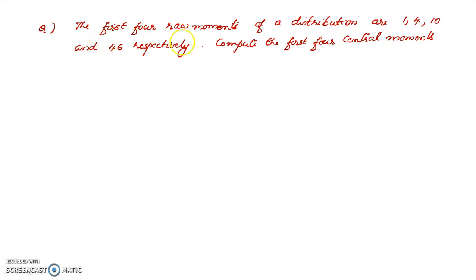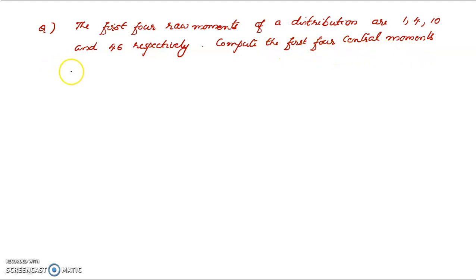The first four raw moments of a distribution are 1, 4, 10 and 46 respectively. Compute the first four central moments.